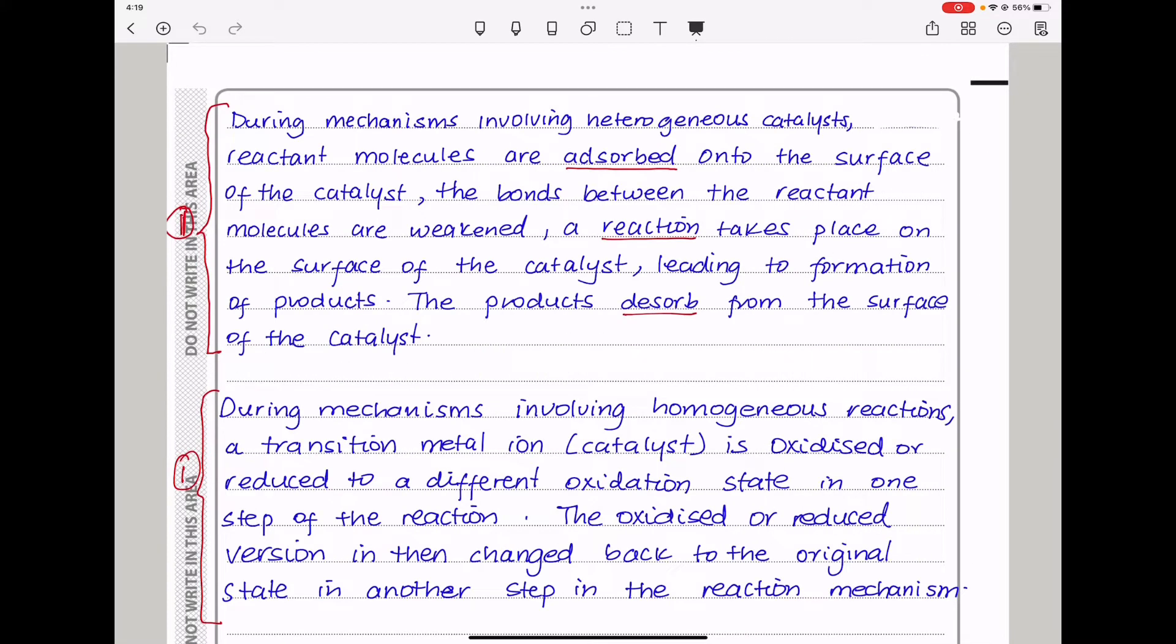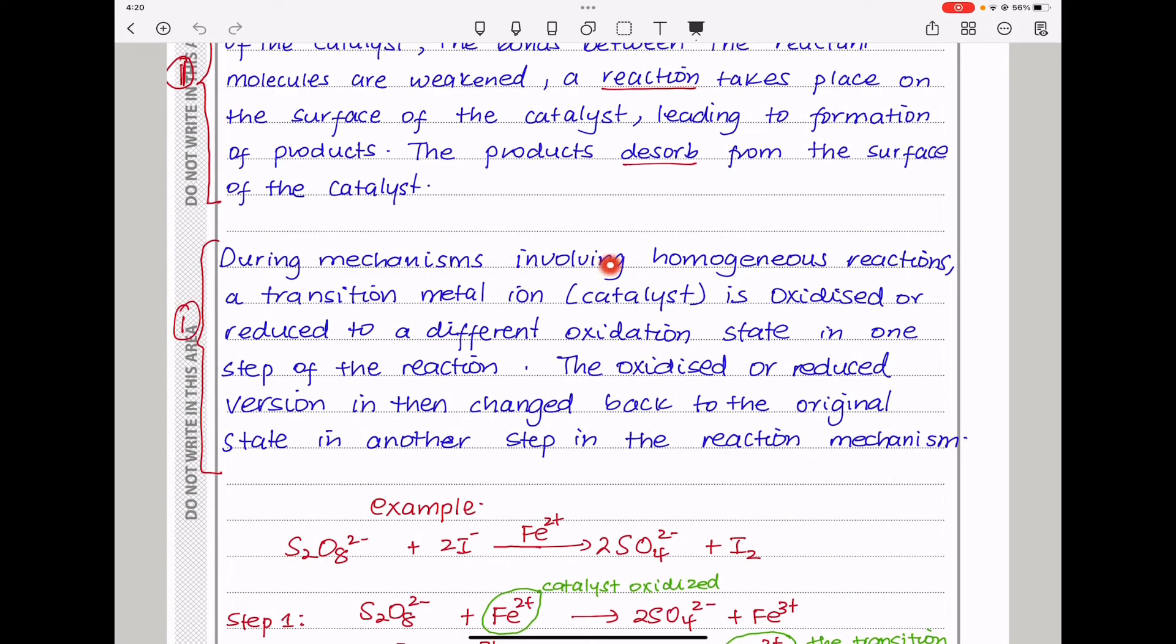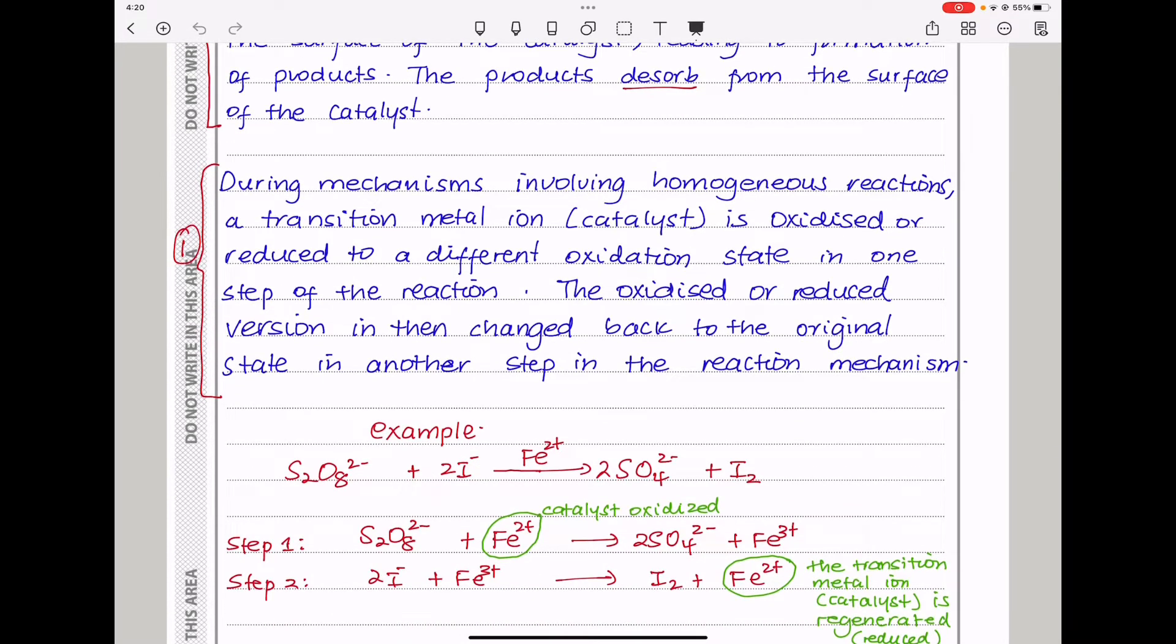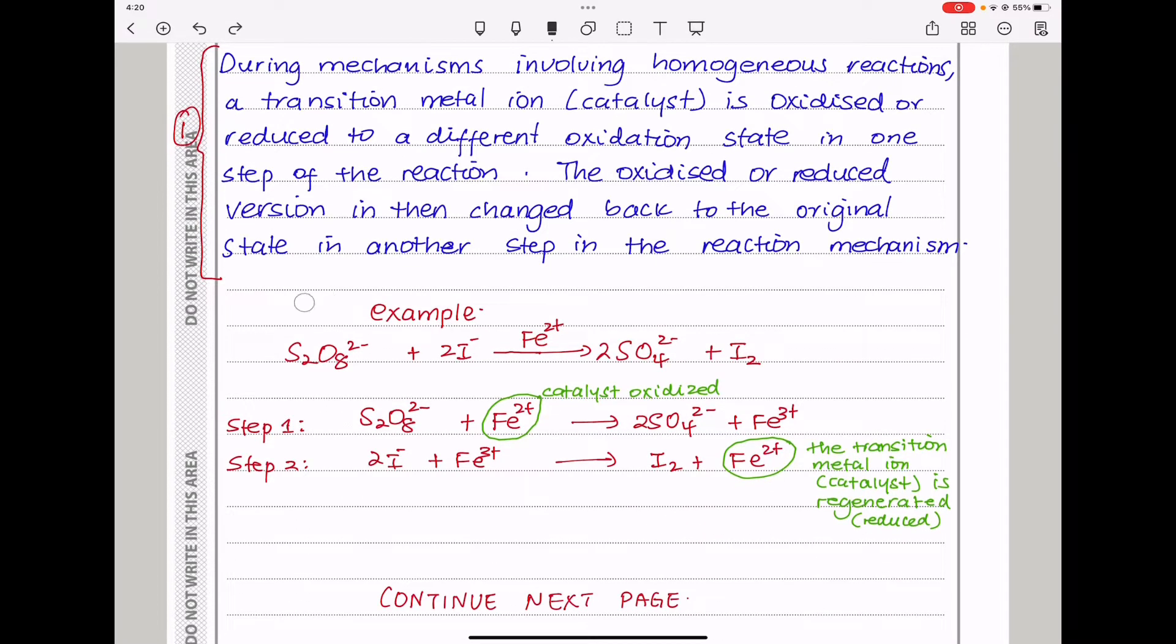Moving on. Lastly, I talked about the mechanisms of these reactions, so I said, during mechanisms involving heterogeneous catalysts, reactant molecules are adsorbed onto the surface of the catalyst. The bonds between the reactant molecules are weakened and the reaction takes place on the surface of the catalyst leading to formation of the products. The formed products desorb from the surface of the catalyst. During mechanisms involving homogeneous reactions or homogeneous catalysts, a transition metal ion, this is a catalyst, is oxidized or reduced to a different oxidation state in one step of the reaction and then the oxidized or reduced version is then changed back into the original state in another step in order to regenerate the catalyst.